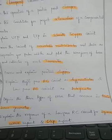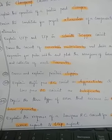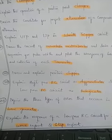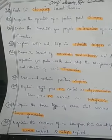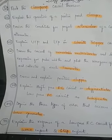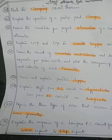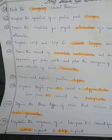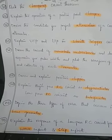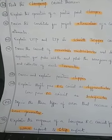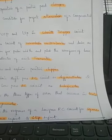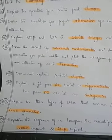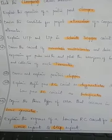The next question is: define the three types of errors that occur in a time base generator. We have a time base generator topic, and you need to write what the three errors are — sweep error is one of them. Explain all three errors.